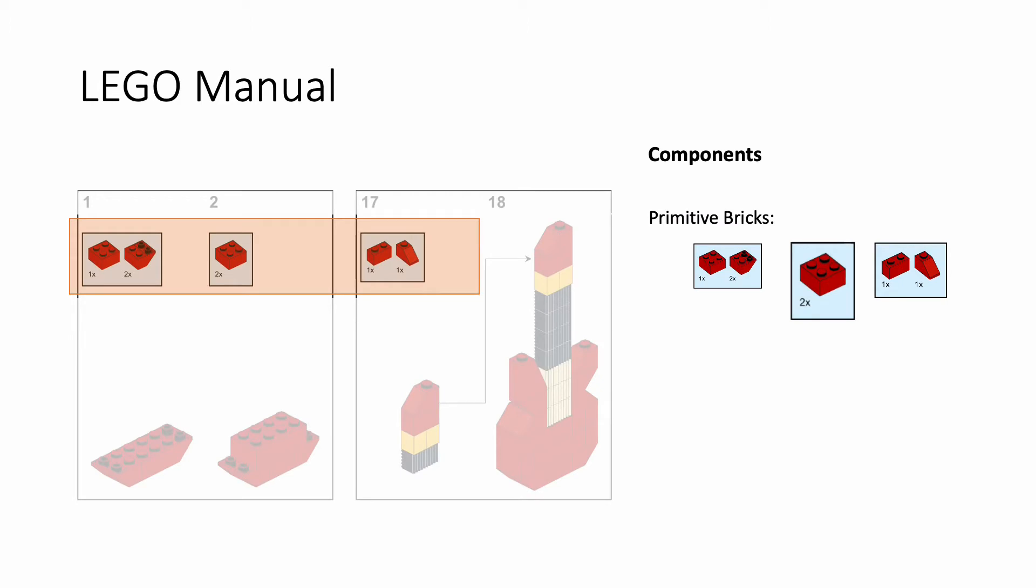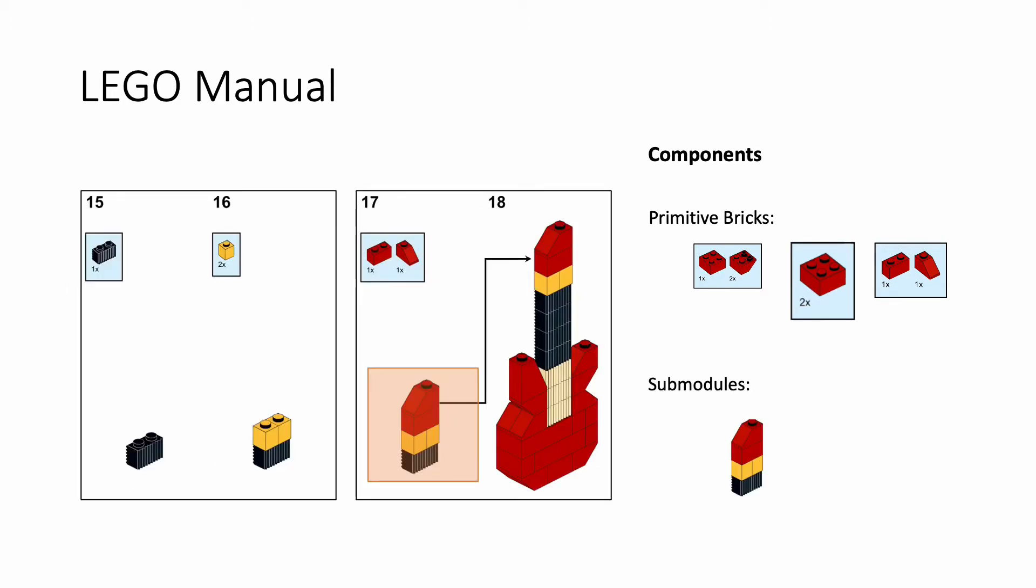The components in each step can be selected from a predefined library of primitive bricks. They can also be composed from primitive bricks in previous steps, like the head of the guitar here. We call this type of component a sub-module.